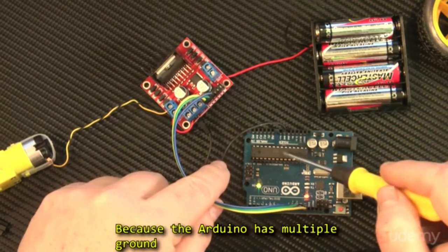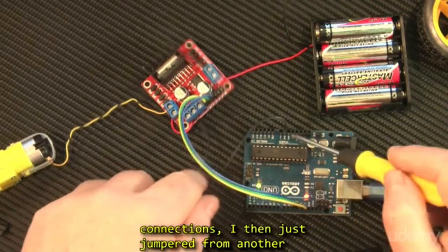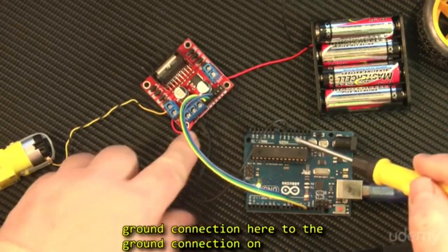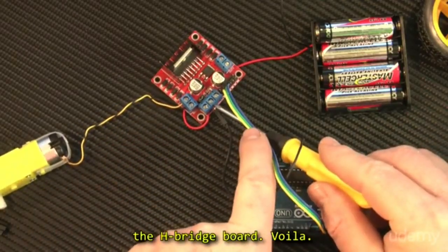Now because the Arduino has multiple ground connections, I then just jumpered from another ground connection here to the ground connection on the H-bridge board, voila.